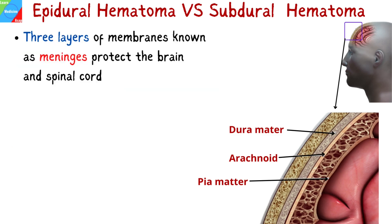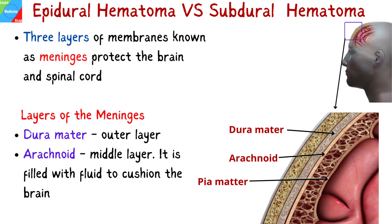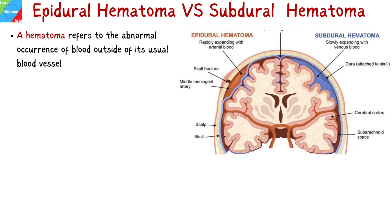Just below the cranium, a few layers of membrane cover the human brain for protection. These layers are called meninges. The outer layer is called the dura mater. The middle layer is the arachnoid, which is filled with fluid to cushion the brain, while the pia mater forms the delicate inner layer. A hematoma refers to the abnormal occurrence of blood outside of its usual blood vessel.